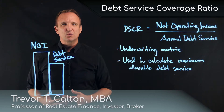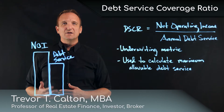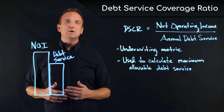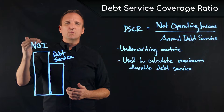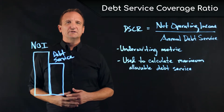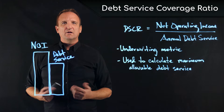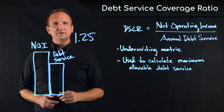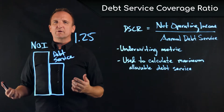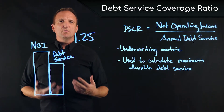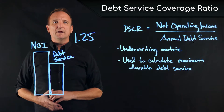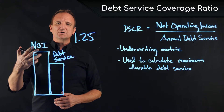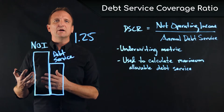Today we're talking about debt service coverage ratio. DSCR is an underwriting term used by lenders that effectively sets a minimum for the amount of net operating income available to cover the debt service. The ratio is often set right around 1.25 — sometimes 1.2, sometimes 1.3 — depending on the industry, the market, market timing, and the product type.